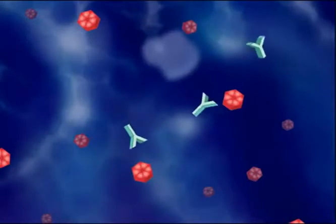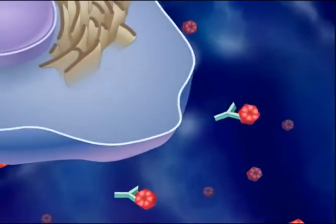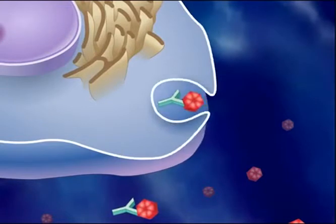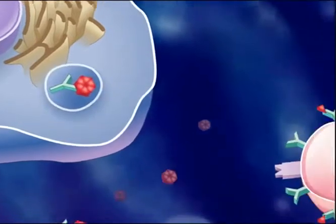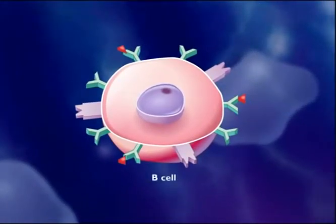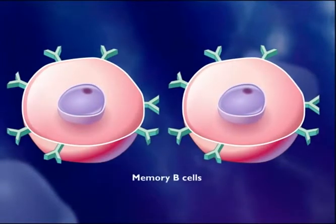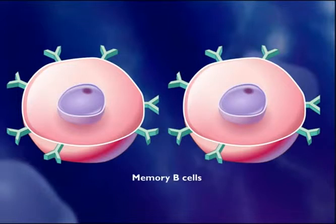Antibodies bind to the antigens on the surfaces of the pathogens, marking them for destruction by macrophages. Some of the B-cells do not turn into antibody factories, but instead become memory B-cells that may survive for several decades. Because of these memory B-cells, the secondary immune response to a future infection by the same pathogen is swifter and stronger.